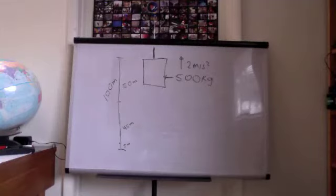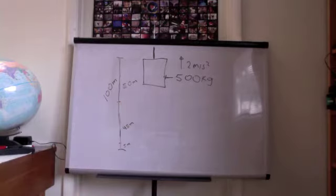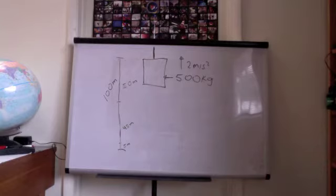A 500 kg elevator rises up a 100 meter elevator shaft with a constant acceleration of 2 meters per second squared. When it reaches the top, the elevator comes to a complete stop before the cord suddenly snaps and the elevator falls back down the shaft. It falls a distance of 50 meters before the emergency brakes engage and cause a constant deceleration that brings the elevator to a stop 5 meters before the bottom of the shaft.